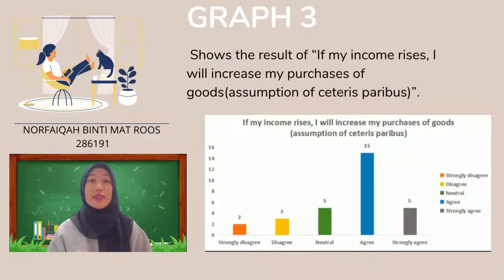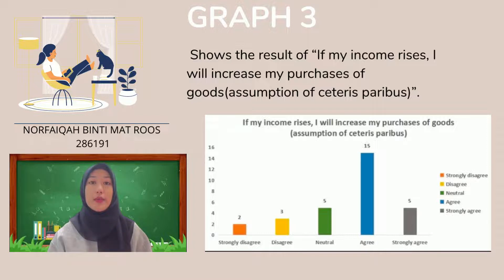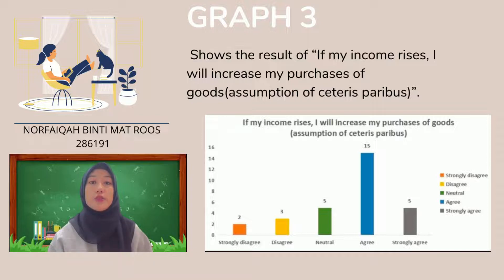Consumer behavior graph 3 shows the result of 'if my income rises, I will increase my purchases of goods.' The highest number of respondents chose agree, at 50% out of 30 respondents. Owing to this, the income effect describes how a change in the price of a good can change the quantity that consumers demand for that good and related goods, based on how the price change affects their real income.